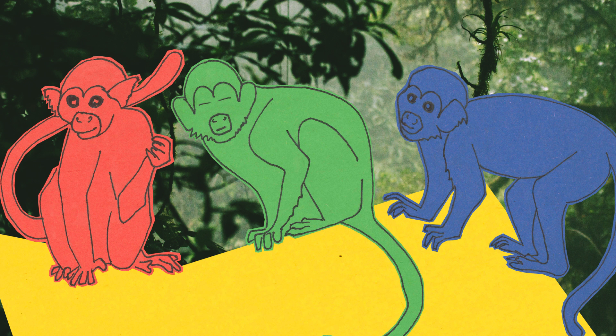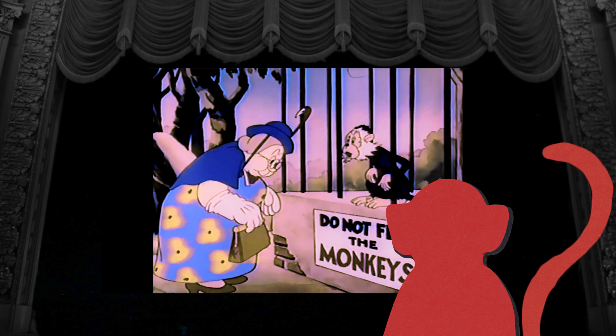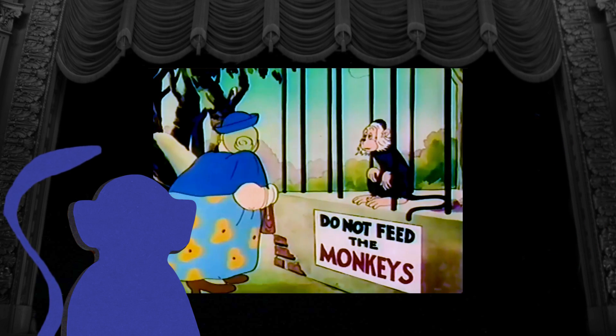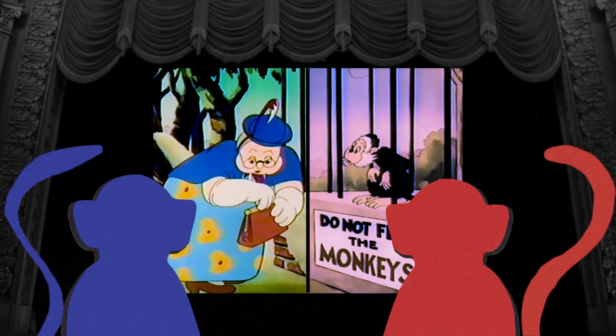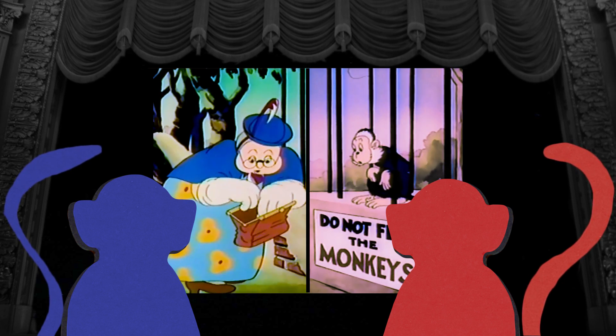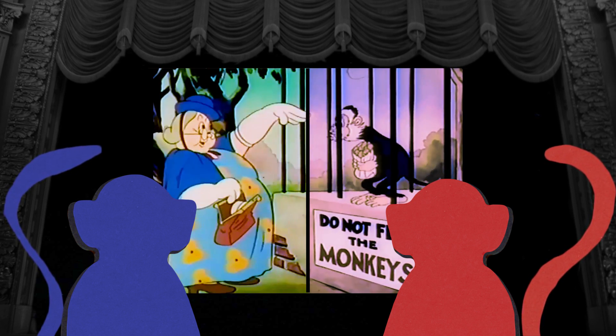Color vision more than likely evolved in primates about 35 million years ago. Some monkey species have incredibly interesting color vision — some monkeys in the population see two colors and others see three. So you have a population of monkeys where one part is seeing a completely different colored world than the other part.